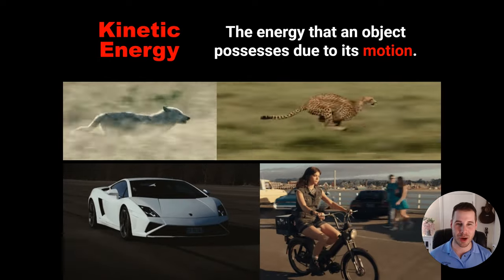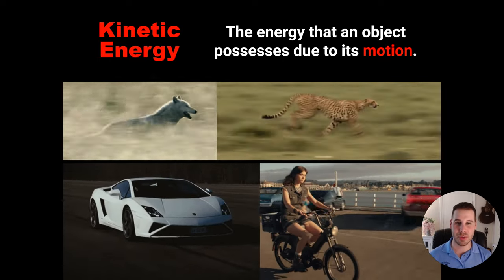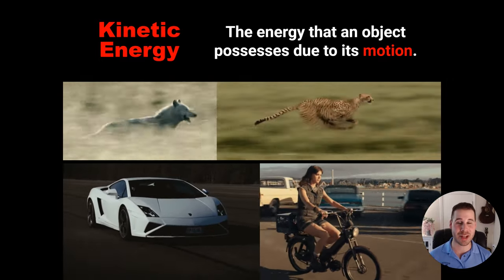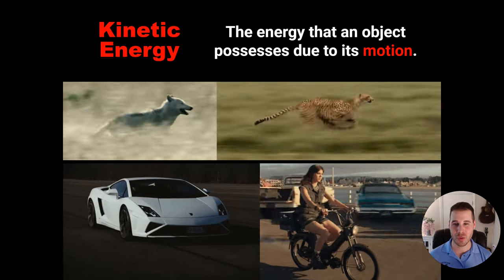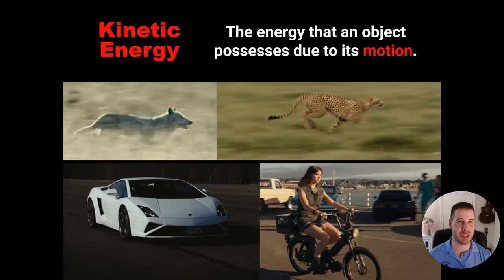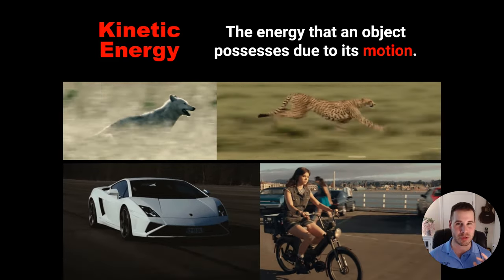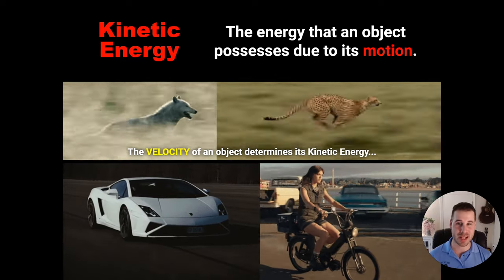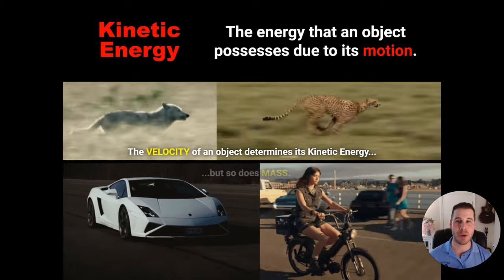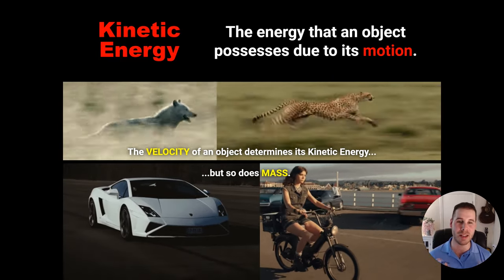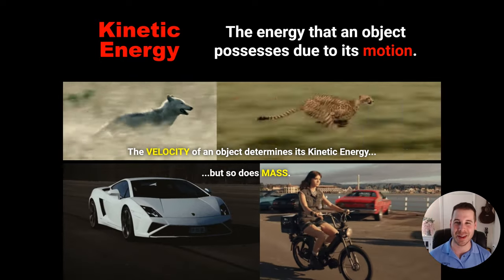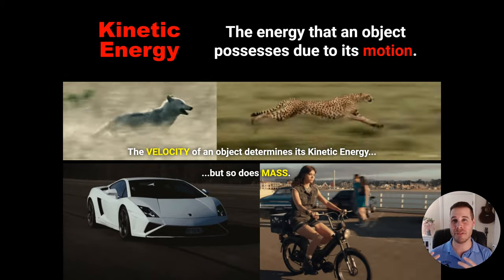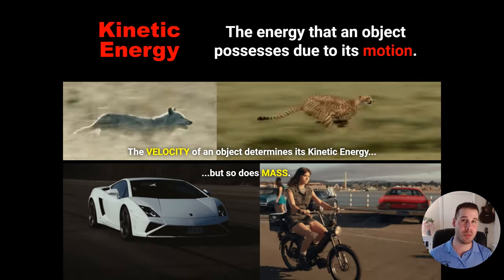Now look at two images: a girl on a bike and a car moving at about the same speed. Which has greater kinetic energy? That would actually be the car. There are two things that matter for kinetic energy: velocity, which is the more obvious one, and mass. The car and the bike are traveling with the same velocity, but the car has more mass, so there's more stuff that is in motion. Overall, you could say there's more motion in the car.